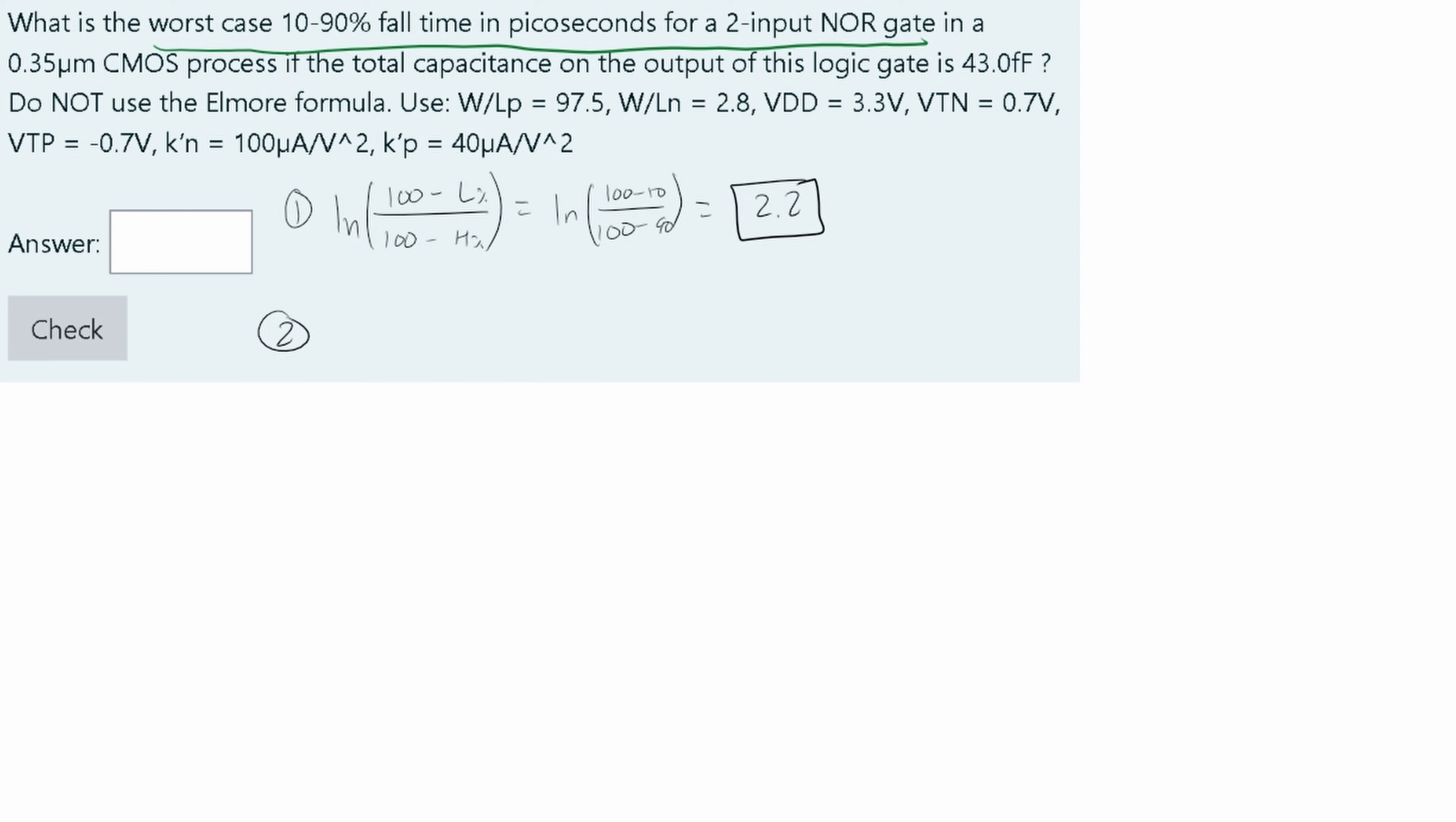Step two is finding the RN resistance. This is going to be equal to one divided by our beta N times VDD minus VTH. For this specific problem, VTH is going to equal the absolute value of VTP, which is very important.